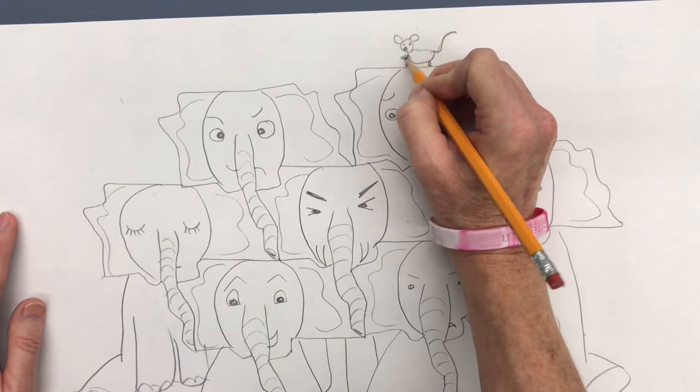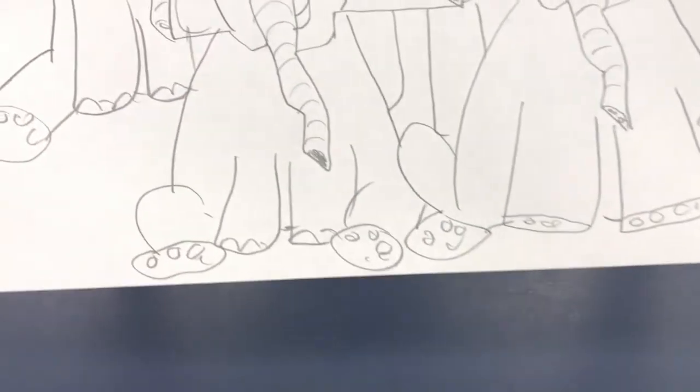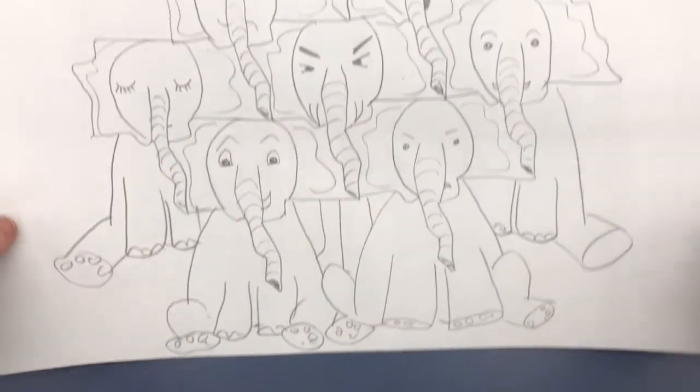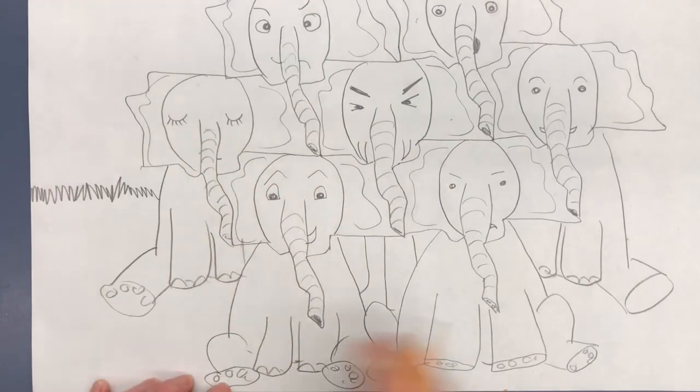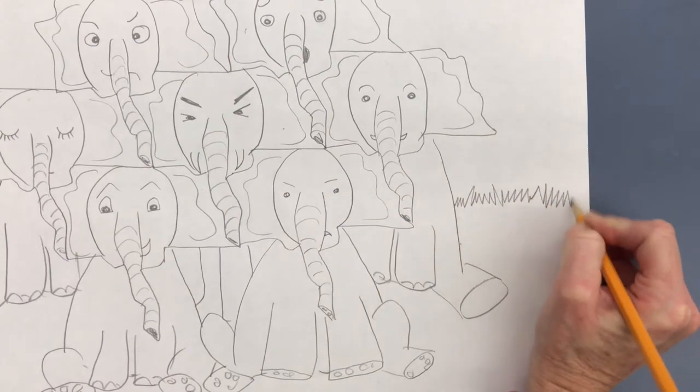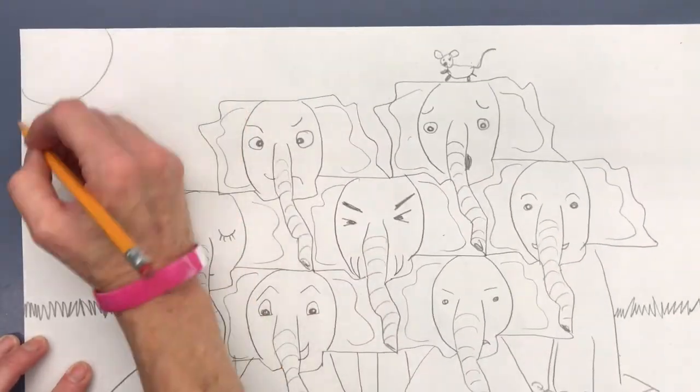Here's a little mouse on the top of the head. I think it needs a little land, so I'll put some grass behind them. Everything above that's going to be sky. And I think I'm done with part one of my tessellation drawing.